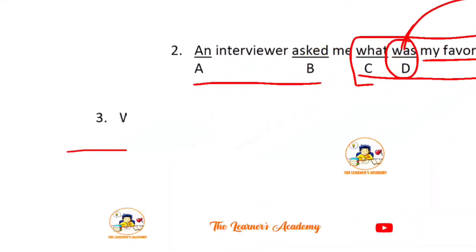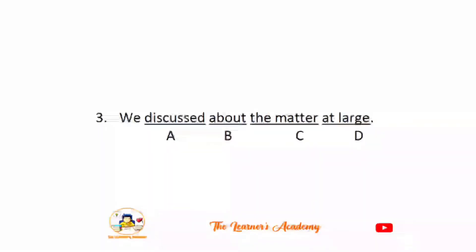Next: We discussed about the matter at large. The error is in option B. We don't use 'about' with discuss. The correct sentence is: We discussed the matter at large. Words like 'discuss', 'request', 'ask', 'tell', 'reach' don't use prepositions. There's a related lecture about words that don't use prepositions.